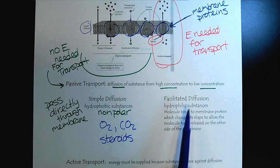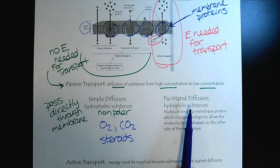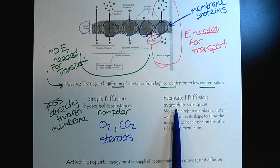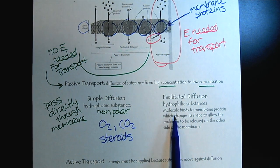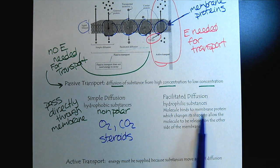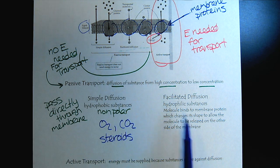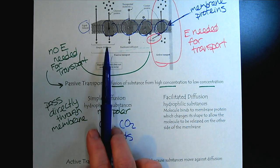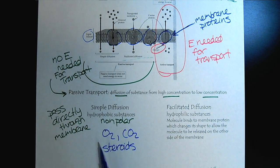And then the facilitated diffusion. Keep in mind that's also passive transport, so no additional energy is required. But it needs to be facilitated because the substances are hydrophilic, so they're not attracted to the nonpolar cell membrane. What happens here is the molecules bind to the membrane protein, which then, in the case of the facilitated transport, it changes shape to allow the molecule to be released on the other side. Or it could be just a direct channel. So that would be the simplest form.